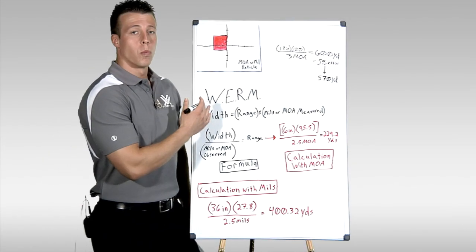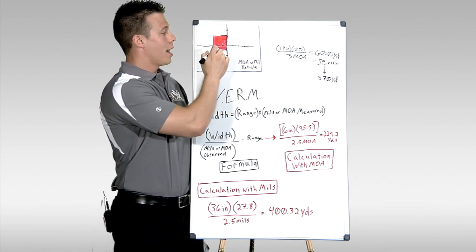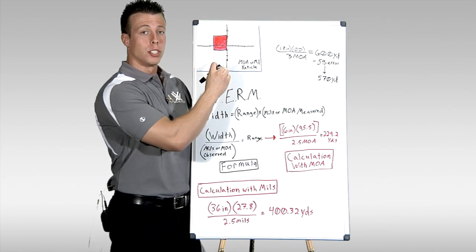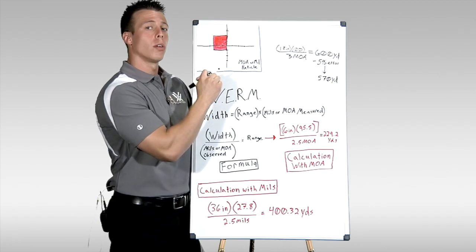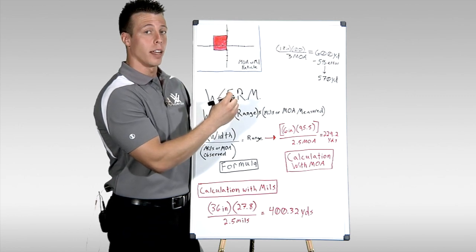The way this system works involves taking a target of known size, plugging that into the reticle, seeing how much distance is taken up, and then using those known values to be plugged into a formula, which will give us an estimated distance to the target.